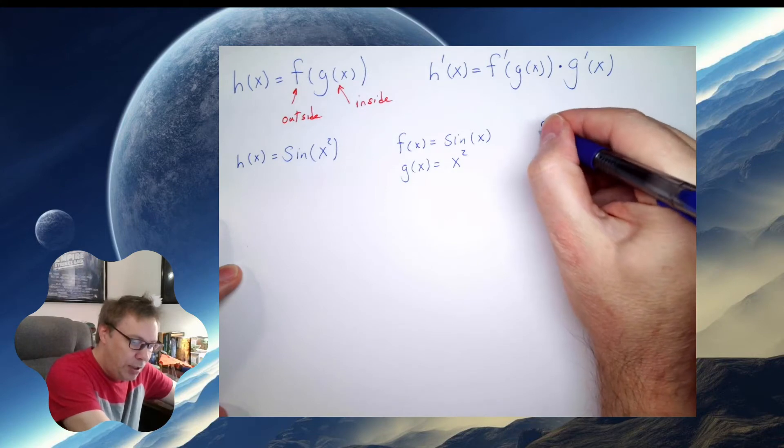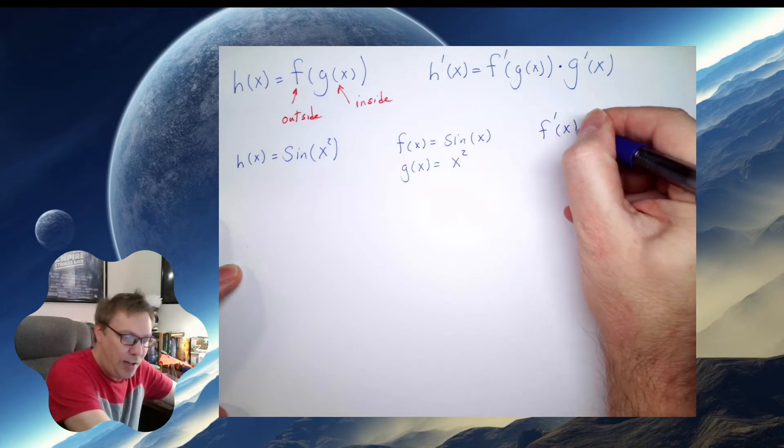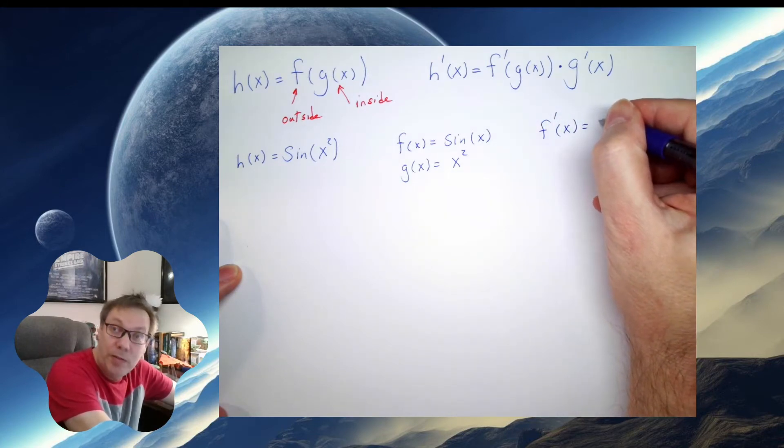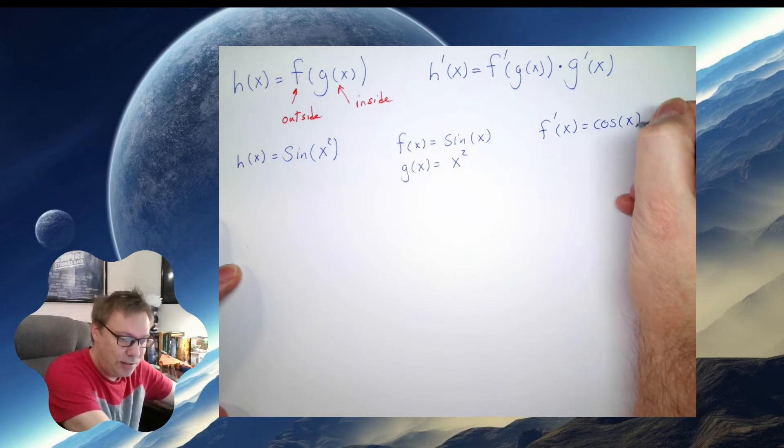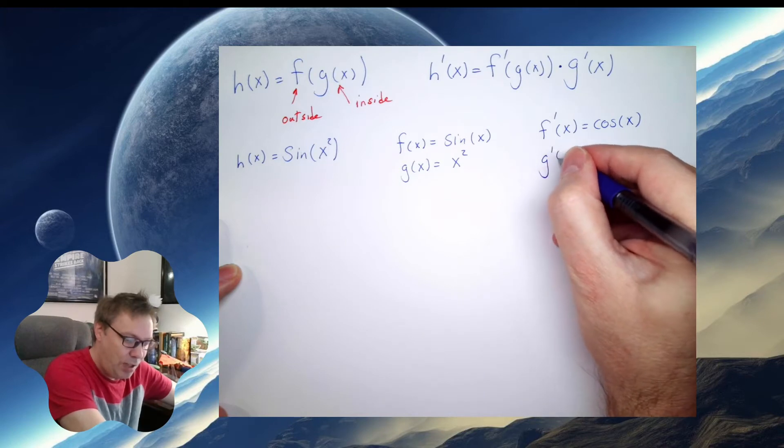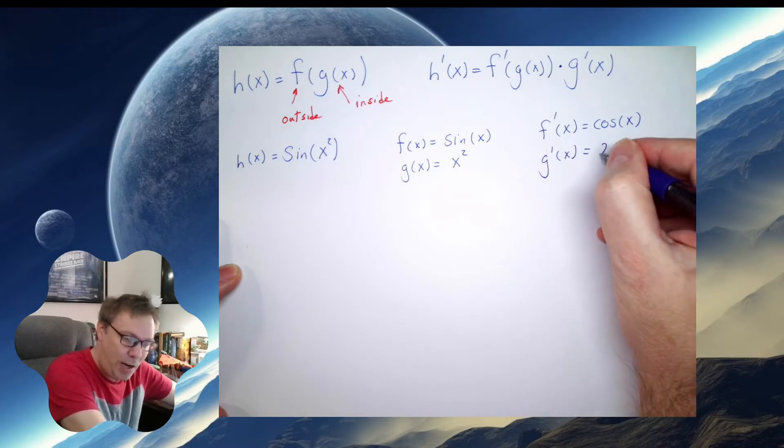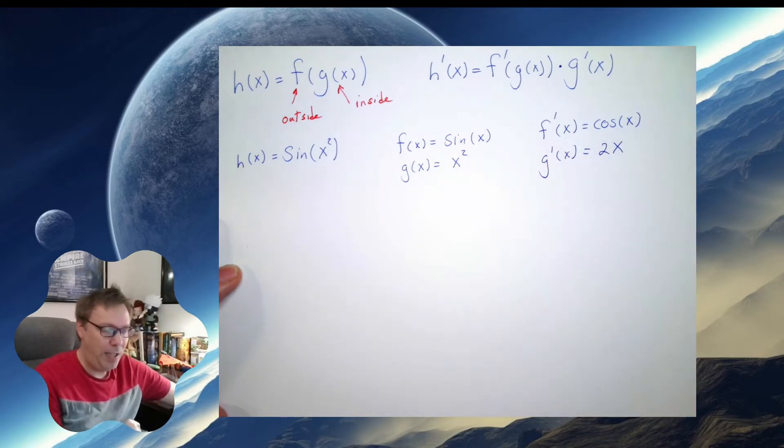So I need to compute some of these. To do this, the first thing I'm going to do is compute f prime of x. And the derivative of sine is cosine of x. And then the derivative of x squared, using the power rule, is 2x.